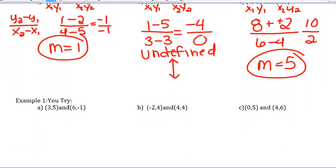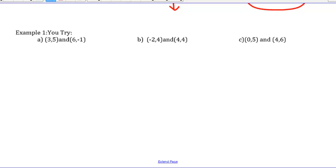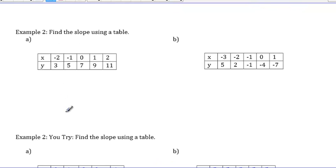You're going to skip over the you try problems. You'll be doing those tomorrow in class. Go ahead and flip the paper on over. And now, for example 2, what we're going to do is we're going to find the slope using a table.